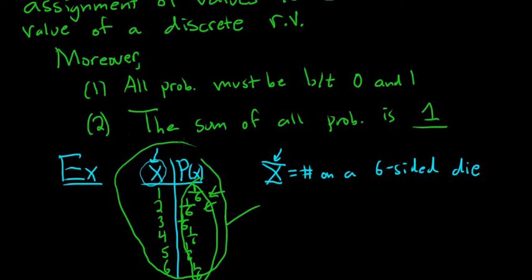That's it — it's a table. When you have a table like this and you're trying to determine if it's a probability distribution, you just have to make sure all the values add to 1, and that they're all actually valid probabilities.